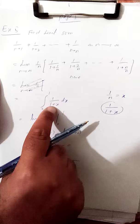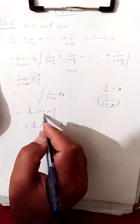We know that the integral of 1/(1+x) is the natural log of (1+x). Putting in the limits: ln(1+1) minus ln(1+0) equals ln(2) minus 0, which equals ln(2). This is the required answer.